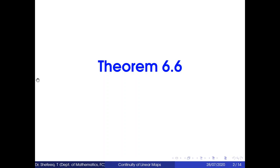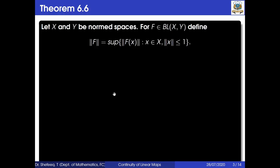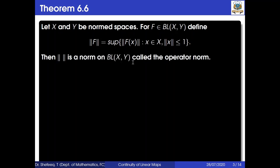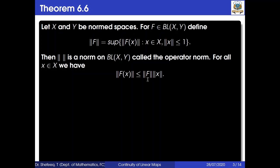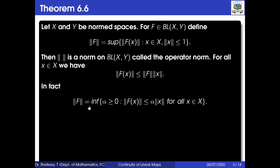In this video we will discuss Theorem 6.6. Let X and Y be normed spaces. For f belonging to BL(X,Y), define the norm of f as the supremum of the set of norms ||f(x)|| such that x belongs to X with ||x|| less than or equal to 1. Then this norm is a norm on BL(X,Y), called the operator norm. Also, for all x in X, we have ||f(x)|| less than or equal to ||f|| times ||x||.